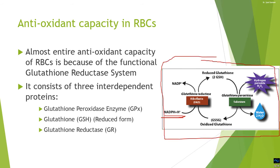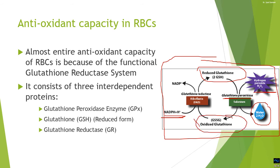This system is functional in RBCs to keep reactive oxygen species at bay. Hydrogen peroxide is produced in higher quantities in RBCs due to glucose oxidation. This hydrogen peroxide and other reactive oxygen species are quenched by glutathione peroxidase, which is a selenium-dependent enzyme, converting hydrogen peroxide into water. In turn, reduced glutathione becomes oxidized and is then converted back to reduced glutathione by glutathione reductase, utilizing NADPH.